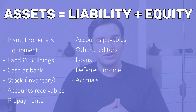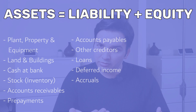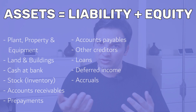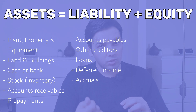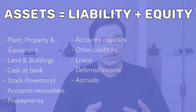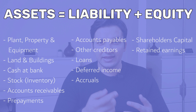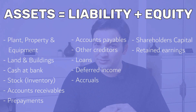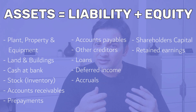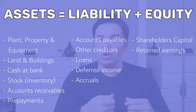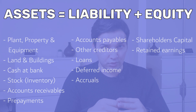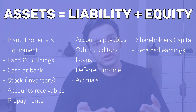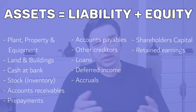In your liabilities you can have accounts payables, also known as trade payables, other creditors, loans, deferred income, and accruals. In the equity you can have shareholders' capital, which is basically the funds the investors or the owners of the business have invested as equity into the business, and you can have retained earnings.